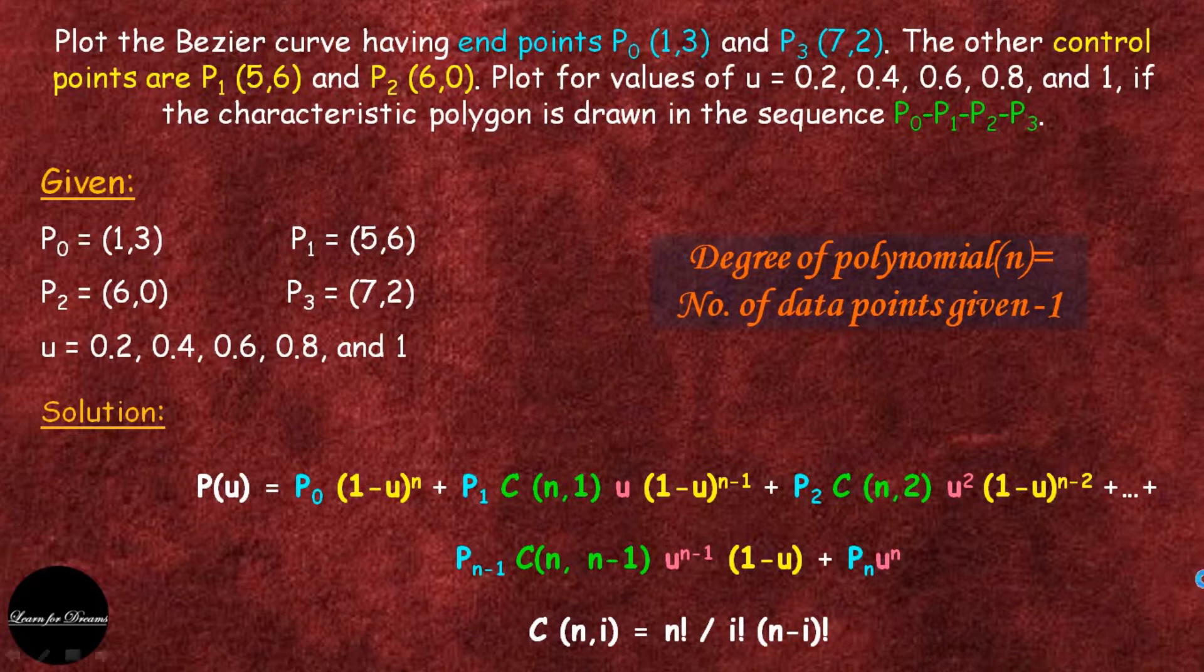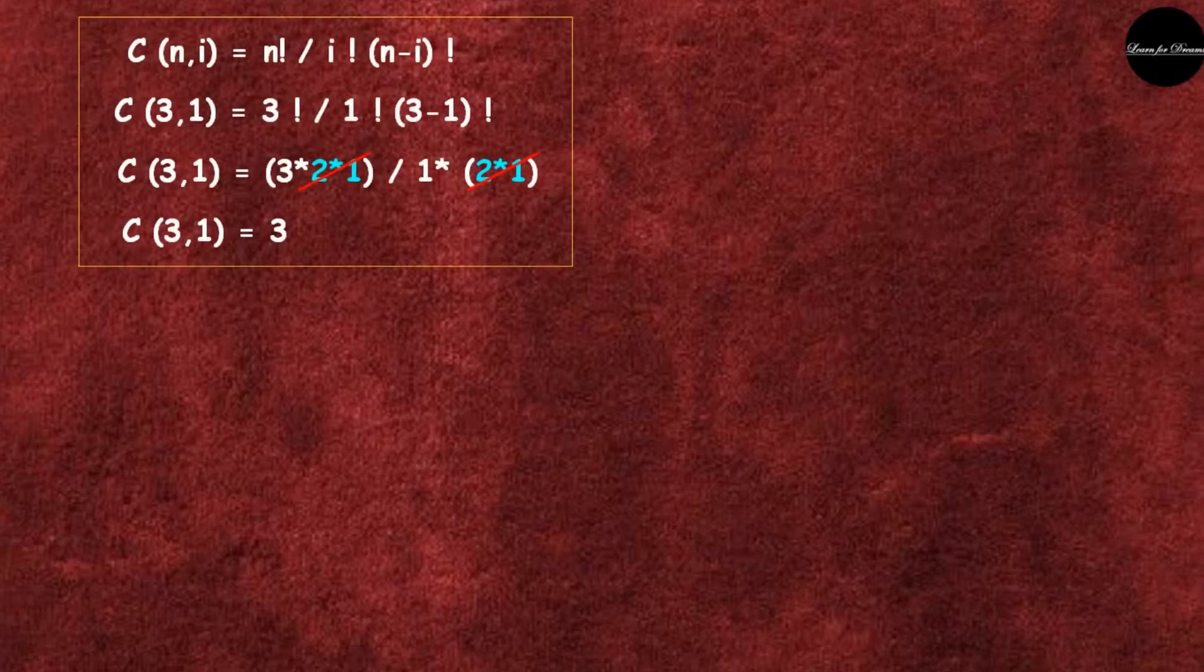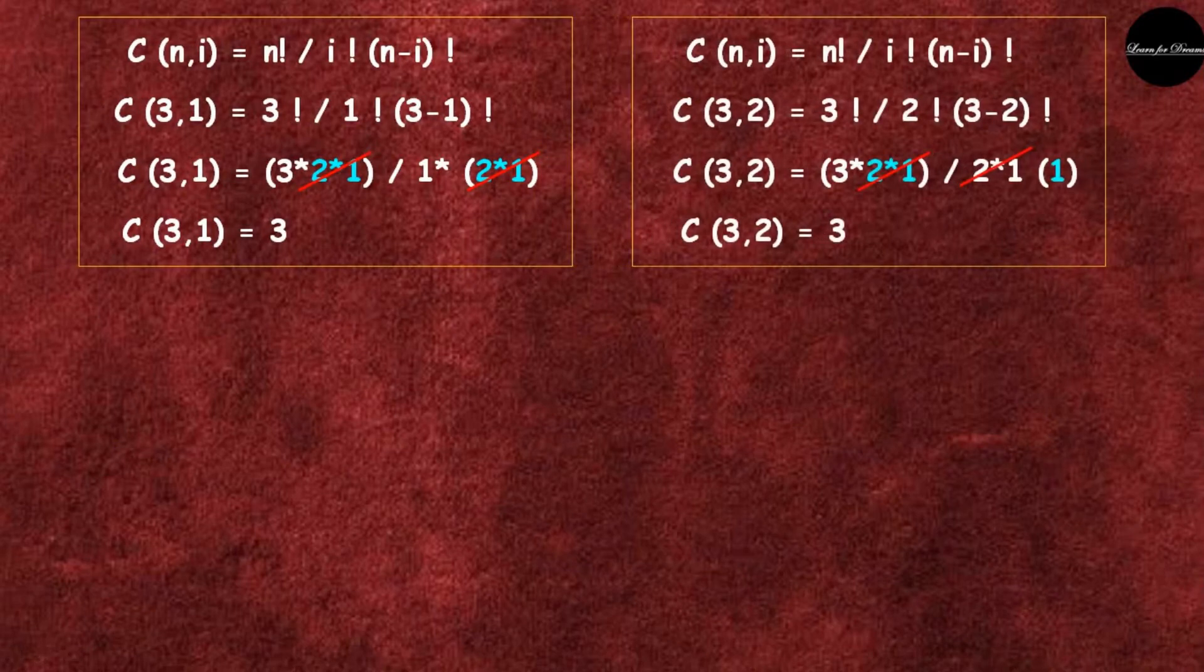Here 4 data points are given, that means degree of polynomial is 3. Now let's find values for C(n,i). C(3,1) is equal to 3 factorial divided by 1 factorial into (3 minus 1) factorial. 3 factorial is 3 × 2 × 1, 1 factorial is 1, and 2 factorial is 2 × 1.